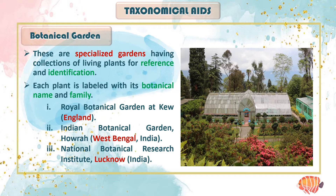Botanical gardens have no concern with beauty or aesthetics. They are mostly concerned with the maximum collection of living plants. These specialized gardens exist because their main target is not aesthetics but diversity — to bring as many varieties of plants as possible. The garden tries to grow the maximum number of plants possible in that environment, which provides a reference source.